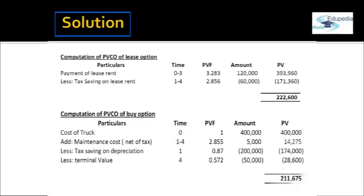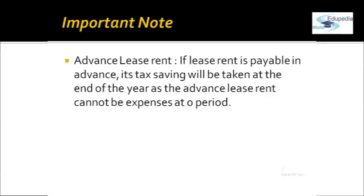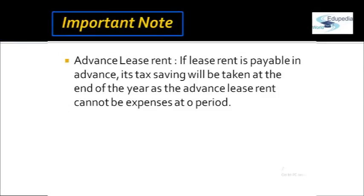Comparing both options, the outflow in the buy option (Rs. 2,11,675) is less than the outflow in the lease option (Rs. 2,22,600). So we would suggest Olsen to go for the buy option. Note that in the case of advance lease rent, though payment is made at the beginning of each year, the tax saving will start from the end of that year.